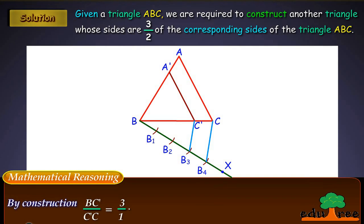Mathematical reasoning: By construction, BC'/C'C equals 3/1. Therefore, BC'/C'C equals BC' plus C'C divided by BC', equals 1 plus C'C/BC', equals 1 plus 1/3, equals 4/3.